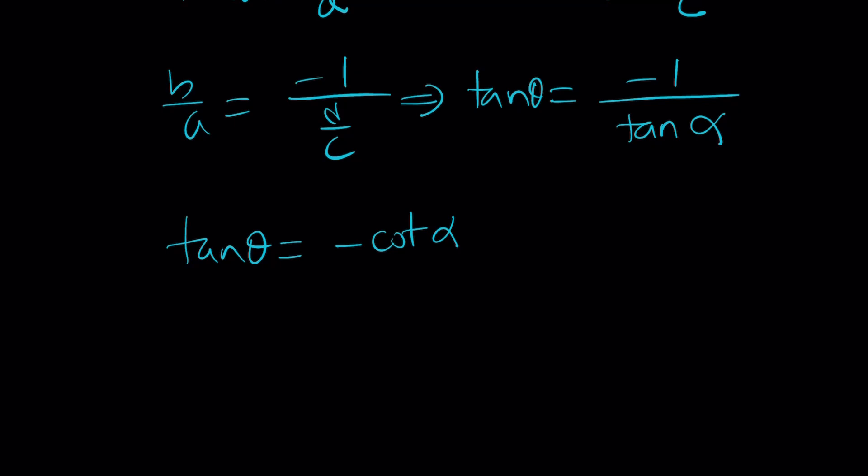And negative cotangent alpha can be written as tangent of pi over 2 plus alpha. For two reasons. First, you need to change from tangent to cotangent. That's why you need a cofunction, pi over 2. And then you also need to negate it. So you need to send from the first to the second quadrant, and that can be done by the addition of pi over 2. So tangent pi over 2 plus alpha does both of these things.